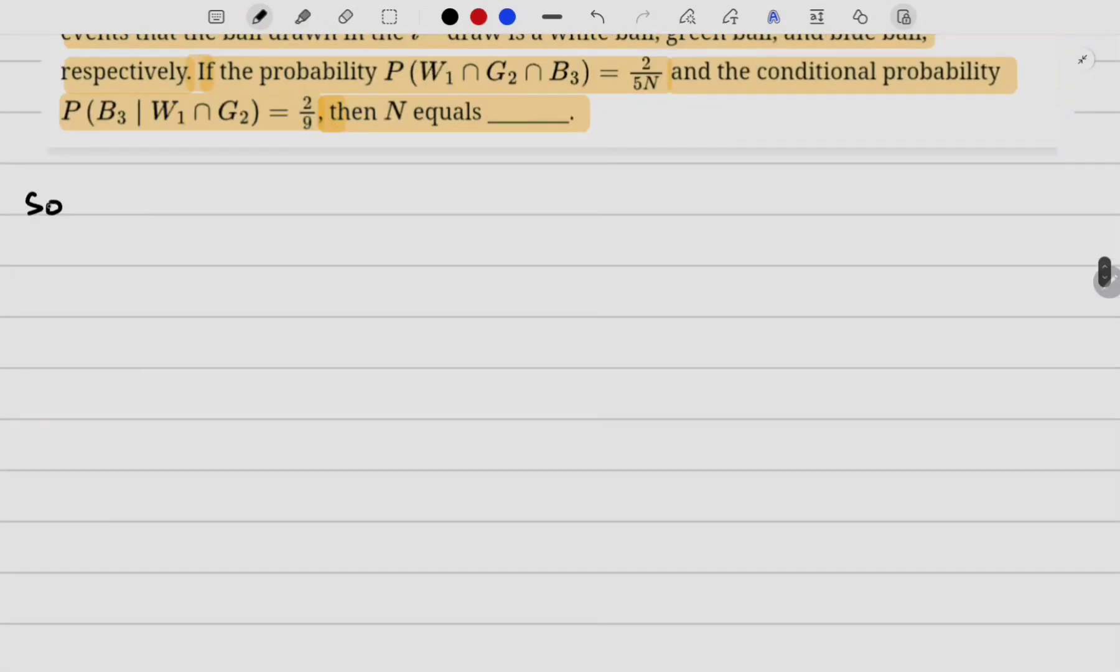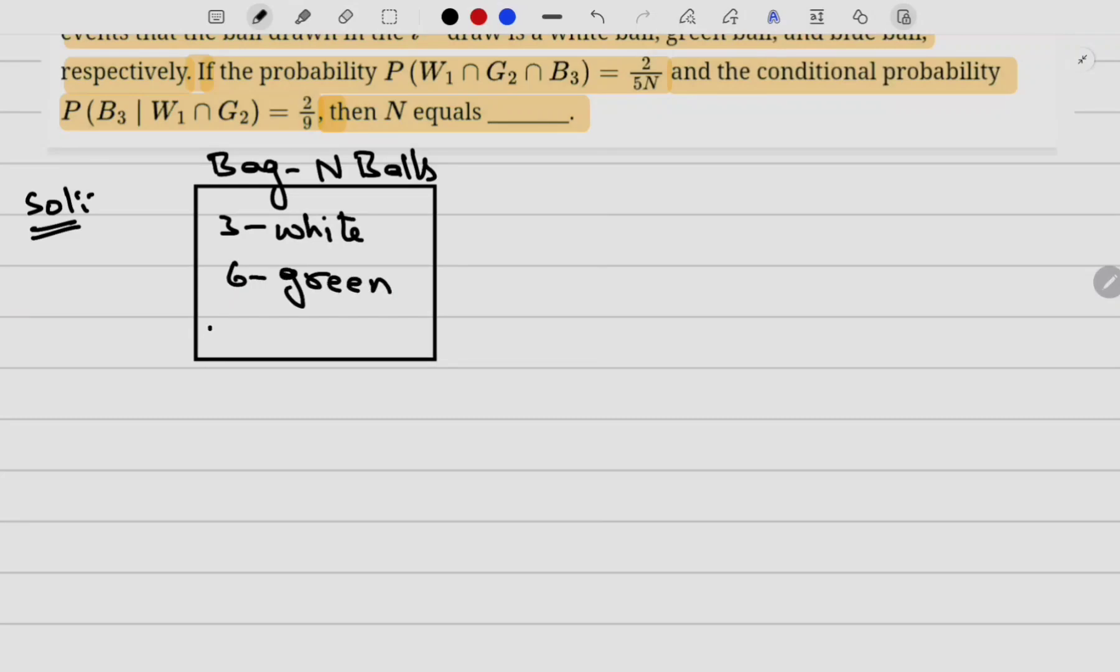Now let me solve this question. First of all, let me consider a bag having N balls with 3 white and 6 green balls, and remaining balls are blue which is N minus 9.